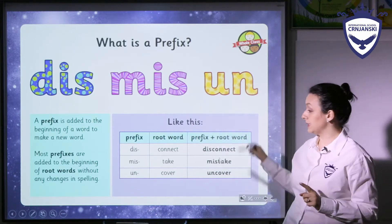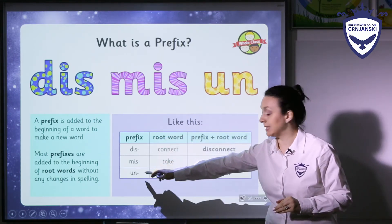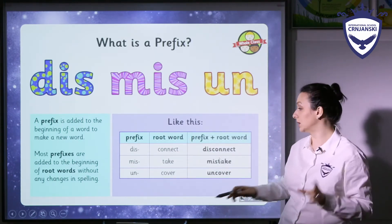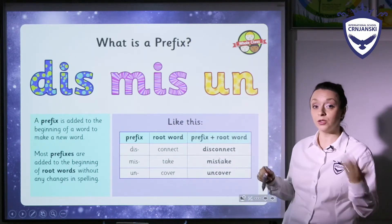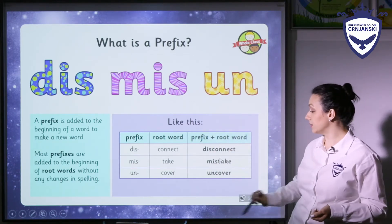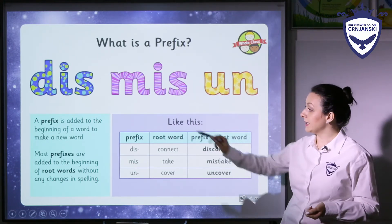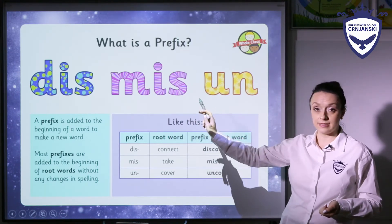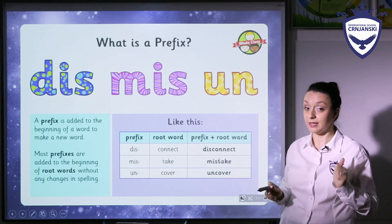This is the example of how we make new words. Prefix dis, mis, un — there is a root word, meaning the main part of the word: connect, take, cover. And when we make a new word — prefix plus root word — it goes like this: disconnect, mistake, uncover. Pay attention: dis and mis are only with one s. Don't write double s — that's very important.